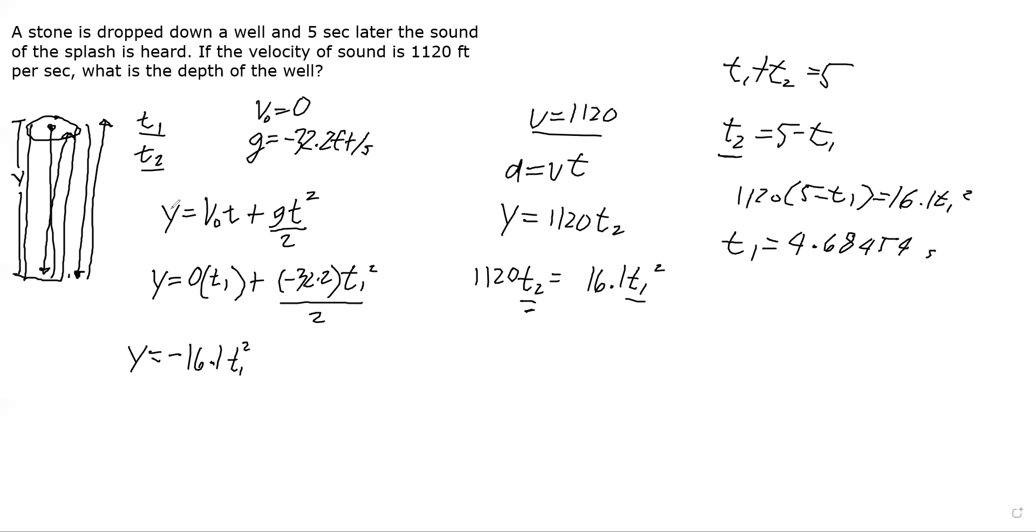What about t₂? Actually we don't need to find it, we're only looking for the height. So substitute into our equation: y equals negative 16.1 times 4.68454 squared. Using the calculator: negative 16.1 times 4.68454 squared. Rounding off, we get negative 353 feet. Since this is height and depth, the negative just indicates direction downward, so disregard the sign. The answer is 353 feet.